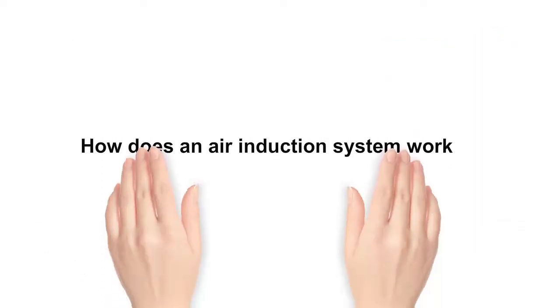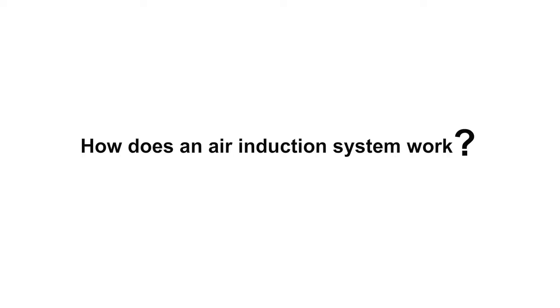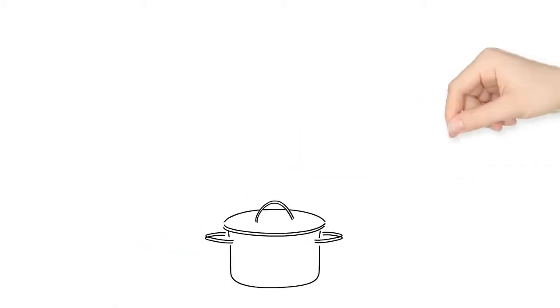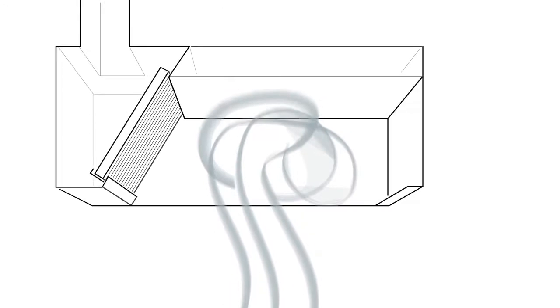How does an air induction system work? Fumes from cooking and frying rise into the catchment space of the extractor hood and accumulate there.